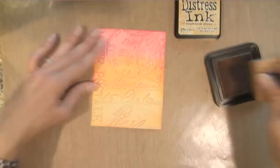And here I am with Barn Door. I'm just blending all three of those together. And you'll see that the dry embossed parts come out a little brighter.